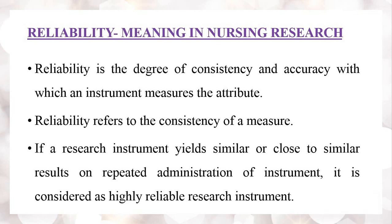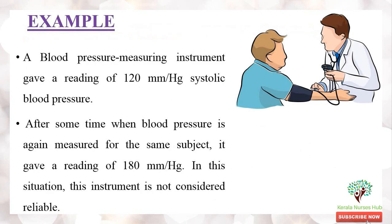If a research instrument yields similar or close to similar results on repeated administration, it is considered a highly reliable research instrument. For example, a blood pressure measuring instrument gave a reading of 120 mmHg systolic for the initial time, but after some time when blood pressure was again measured for the same subject it gave a reading of 180 mmHg. In this situation, this instrument is not considered reliable.